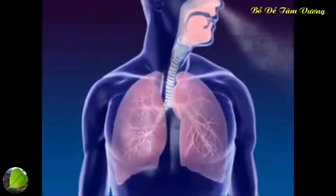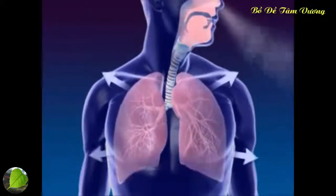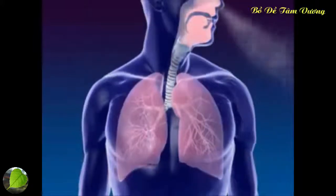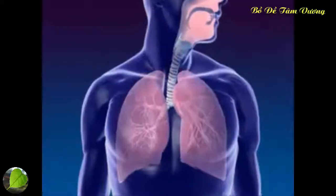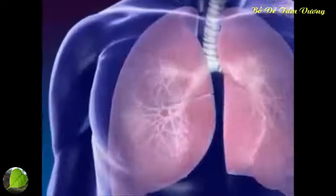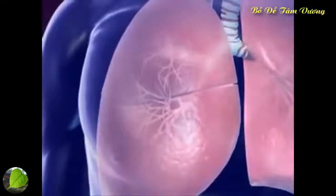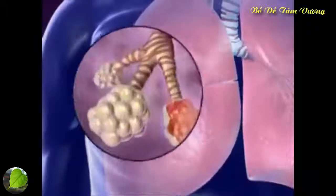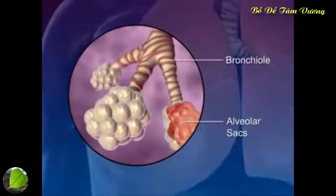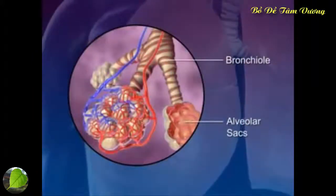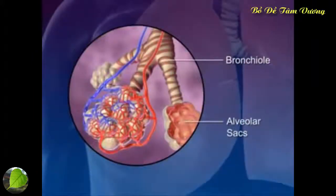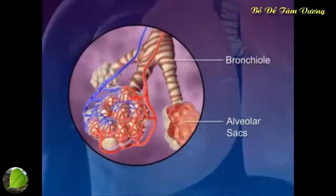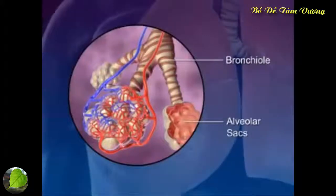Lungs are spongy tissue with alveoli and blood capillaries. Breathing occurs because of the expansion and contraction of the lungs. The bronchi carrying the air subdivide into smaller branches called bronchioles. At the end of each bronchiole are the alveolar sacs, which are surrounded by blood capillaries and contain millions of single-layer alveoli cells where gas exchange takes place.